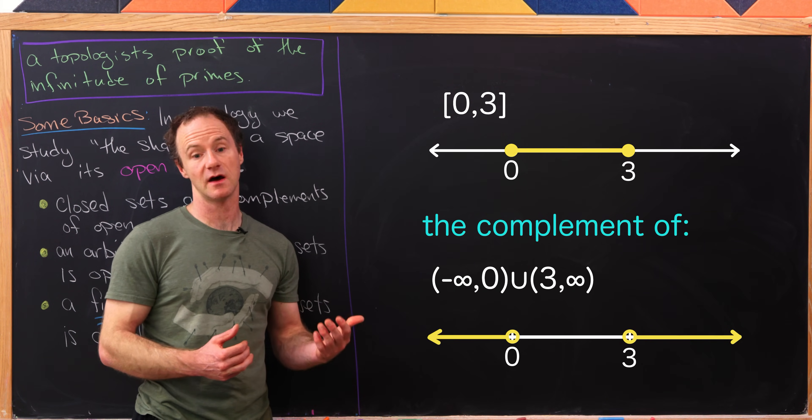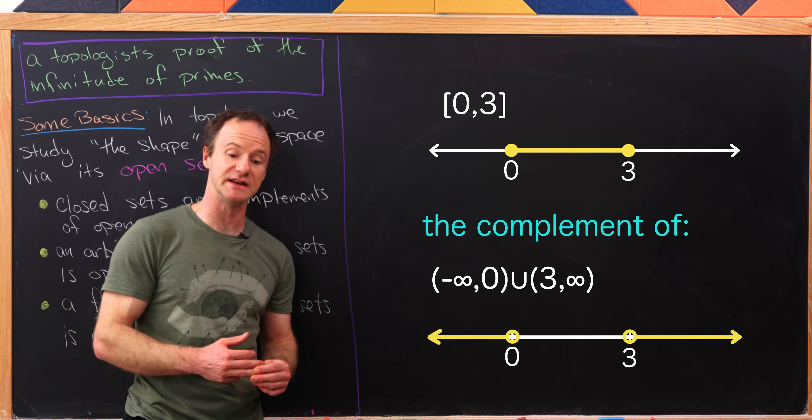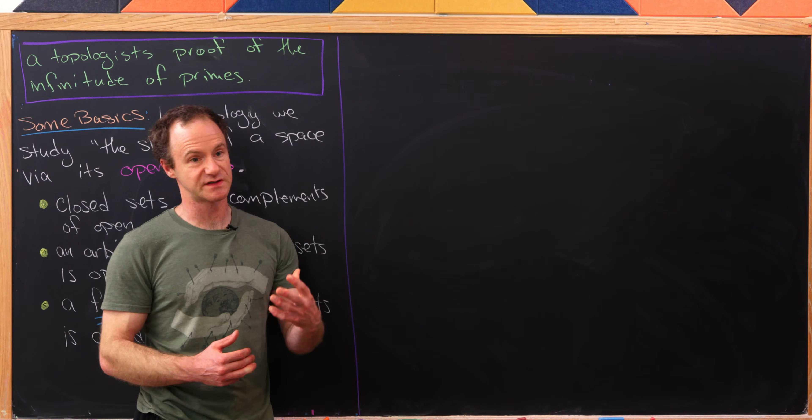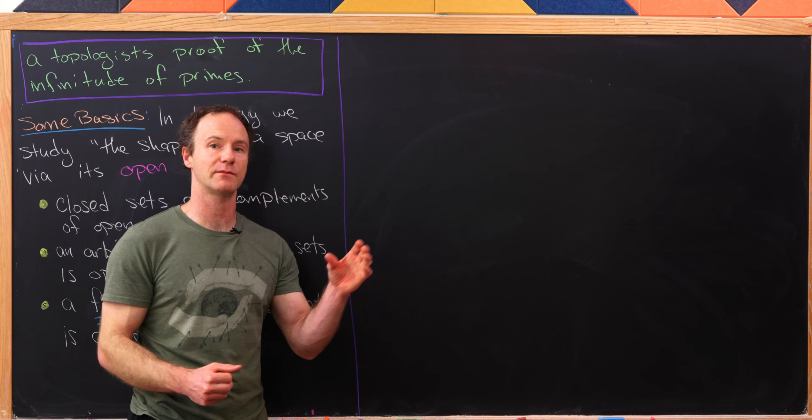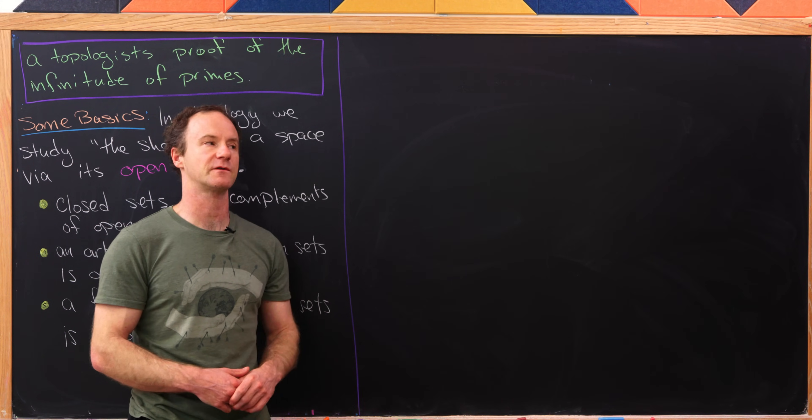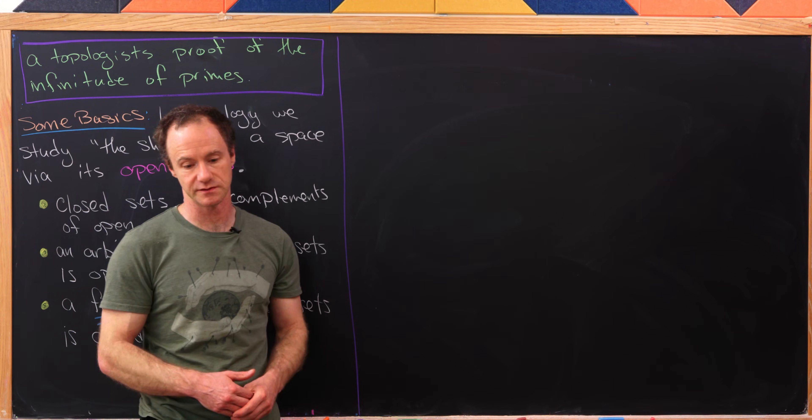Like the complement of the open set from minus infinity to 0, union 3 to infinity. And so since that's an open set, we took its complement, we got the closed interval from 0 to 3, that means the closed interval from 0 to 3 is indeed closed.